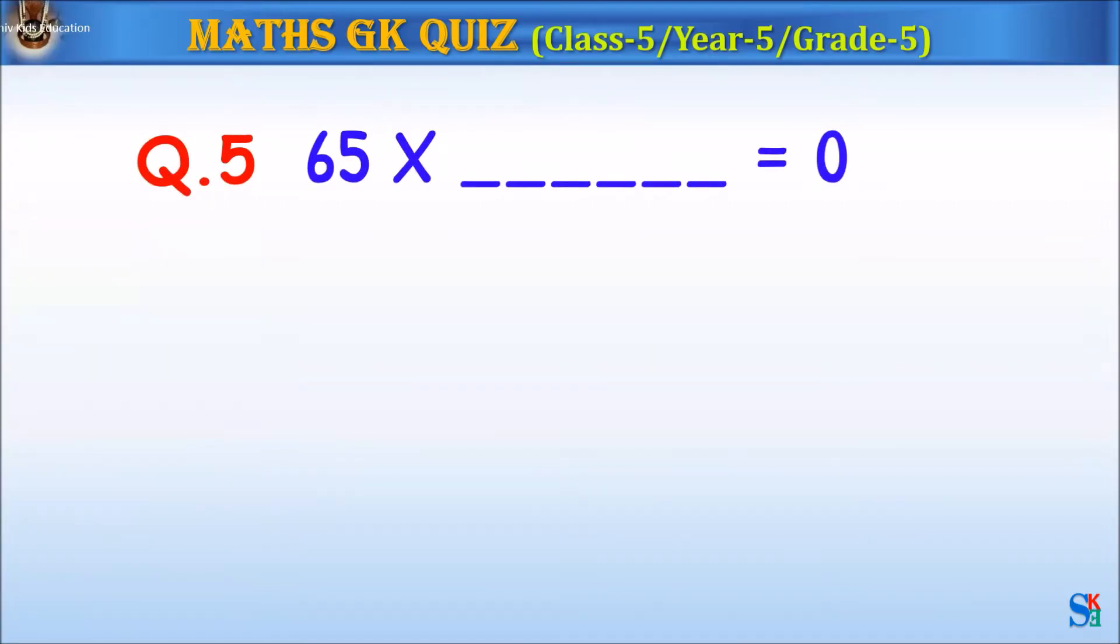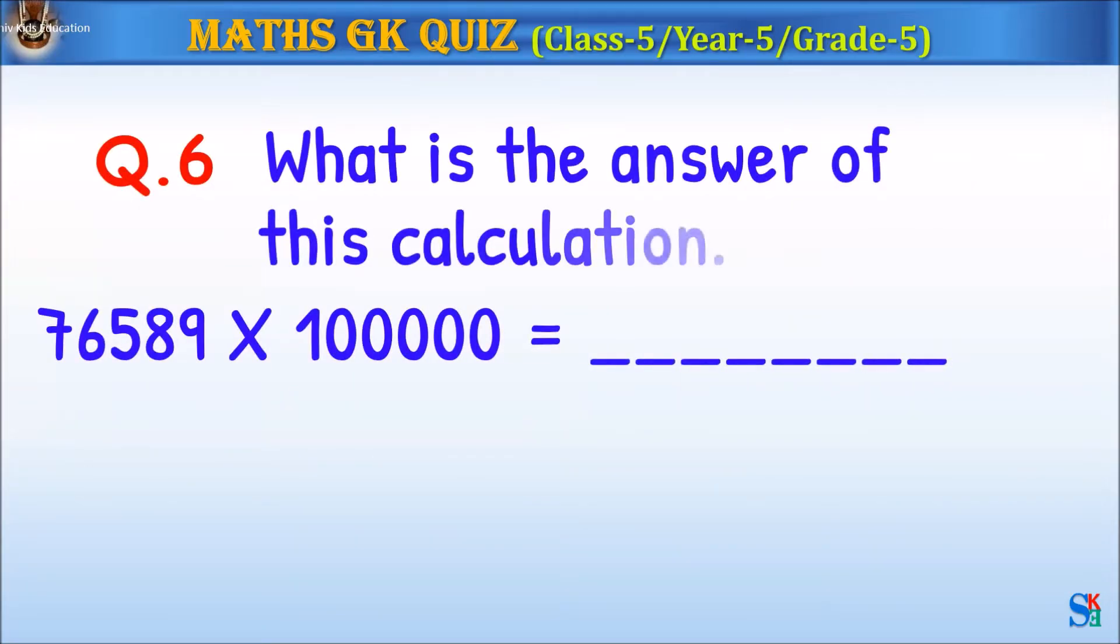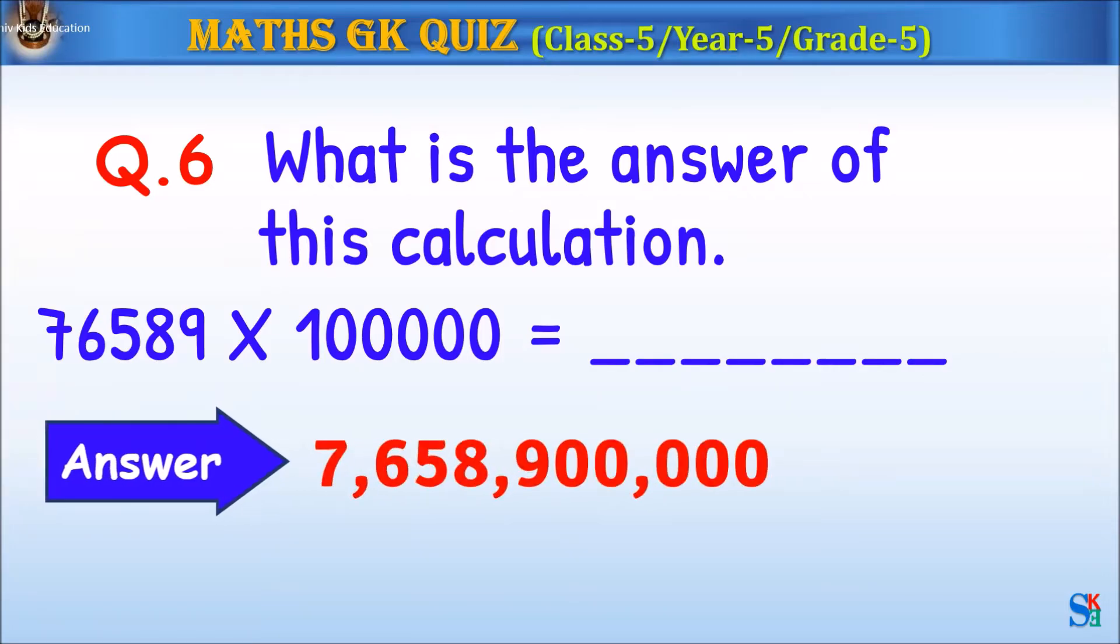Question 5: 65 times what is equal to 0? The answer is 0. Question 6: What is the answer of this calculation? The answer is 7,658,900,000.